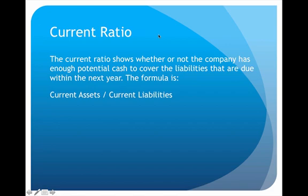The first formula we're going to learn is called the current ratio. This is a very simple, straightforward financial ratio. The formula is current assets divided by current liabilities. Assets are the positive things we own in the business; liabilities are the debts. 'Current' means one year or less. This formula tells us if we're covered in the current year — if we have enough money to pay our debts.